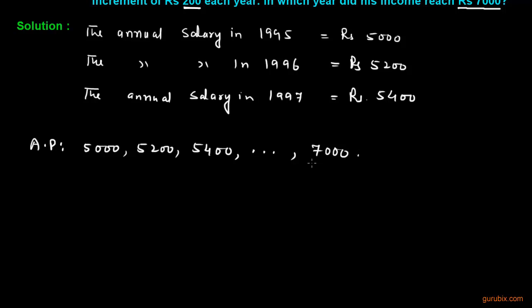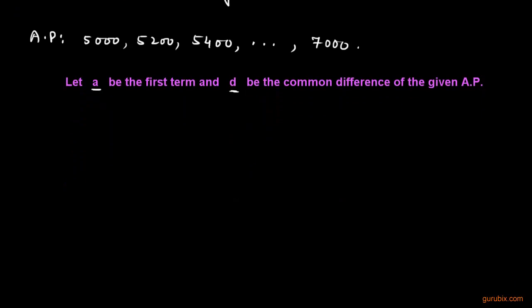This means 7000 is the last term. Now we shall let the first term of this AP be a and the common difference be d. We shall use the general term of arithmetic progression.